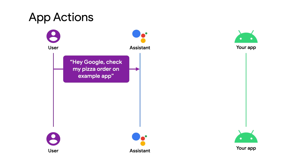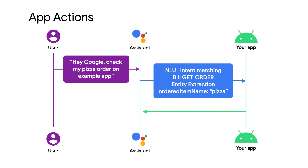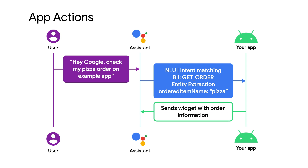check my pizza order on example app, Assistant will process the input, match it to the Get Order built-in intent, and extract pizza from the input for the ordered item name parameter. Since the app has been configured to return a widget for this intent, my order status is displayed within the Assistant. No need to load the entire app just to give a quick update.